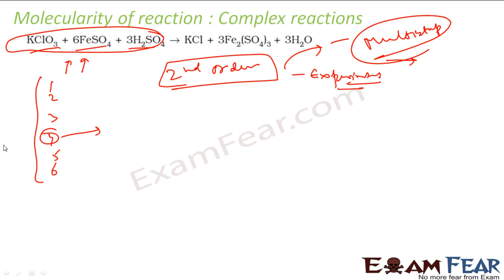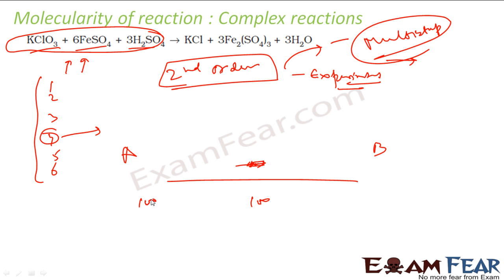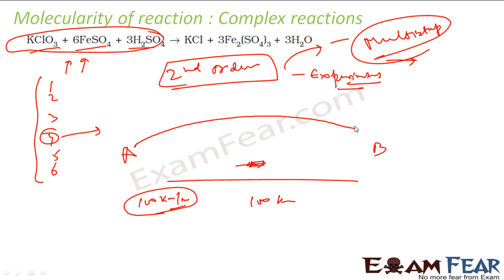Similarly, consider traffic passing from city A to city B — a distance of 100 km. Cars can drive at 100 km/h, so the expected time is 1 hour. But if there is a small narrow passage along the way where only one car can pass at a time, all vehicles get blocked there, speed drops, and it takes much more time. That small narrow passage determines the overall travel time — just like the slowest step determines the overall rate of reaction.